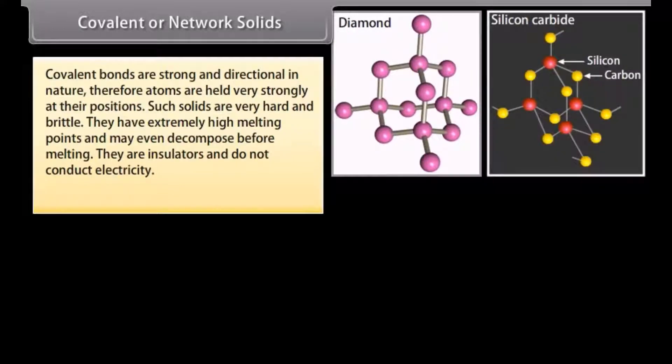Covalent or network solids. Covalent bonds are strong and directional in nature. Therefore, atoms are held very strongly at their positions. Such solids are very hard and brittle. They have extremely high melting points and may even decompose before melting. They are insulators and do not conduct electricity. Examples: diamond, silicon, carbide.